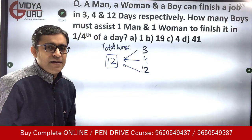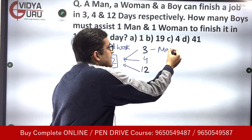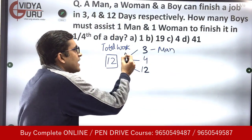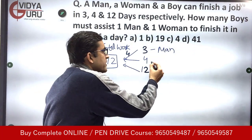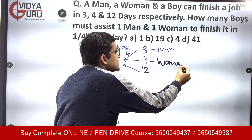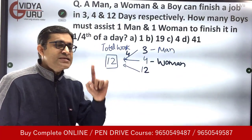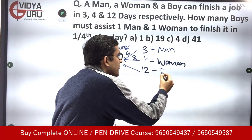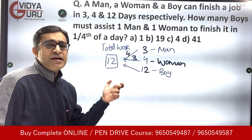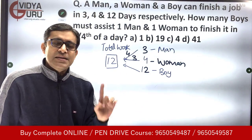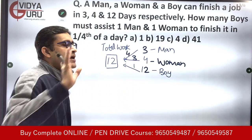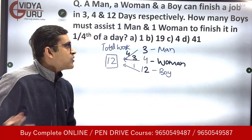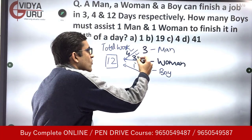A man takes 3 days to complete 12 units, so he does 4 units per day. A woman takes 4 days for 12 units, so she does 3 units per day. A boy completes 12 units in 12 days, so he performs 1 unit per day. Per day work: man = 4 units, woman = 3 units, boy = 1 unit.